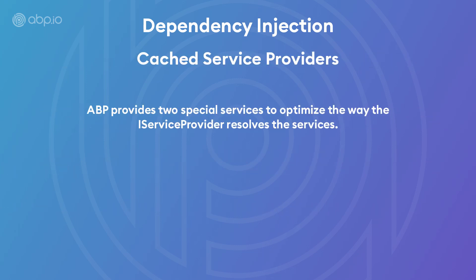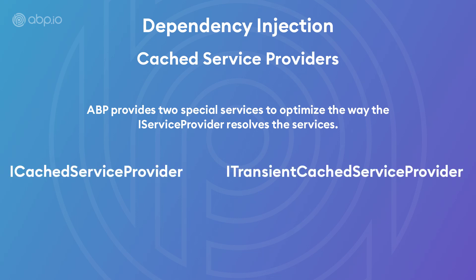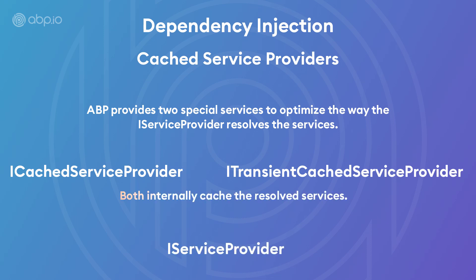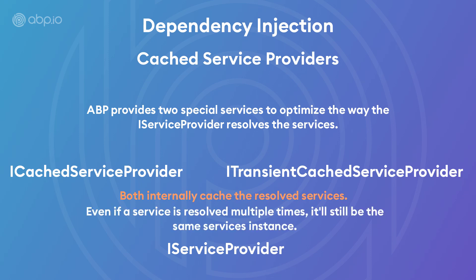ABP provides two special services to optimize the way the iServiceProvider resolves services. It introduces the iCachedServiceProvider and the iTransientCachedServiceProvider. They both inherit the iServiceProvider interface and internally cache the resolved services. So even if you resolve a service multiple times, you'll still get the same service instance. You can also read more about it in the documentation.